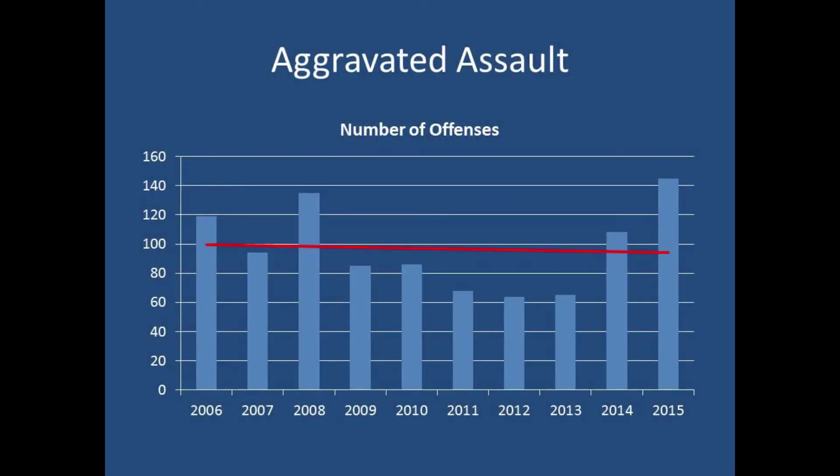On the aggravated assault graph, 2015 numbers have risen. We started experiencing this issue in 2014 and it really hit its peak in 2015. We had a number of drive-by shootings, and the reporting rules state that if someone fires into a home where there are 10 people, that's 10 aggravated assaults — not one vandalism or one shooting into an occupied dwelling — because each of those 10 people were subject to injury from that bullet.